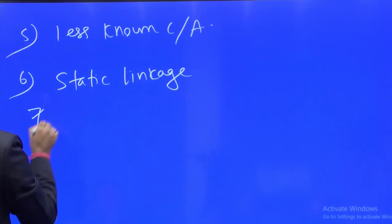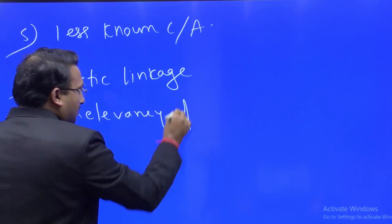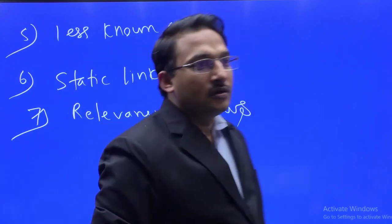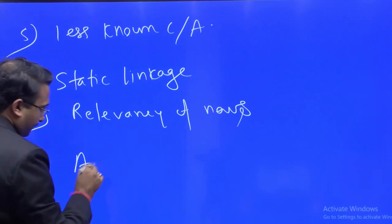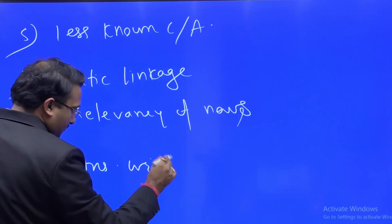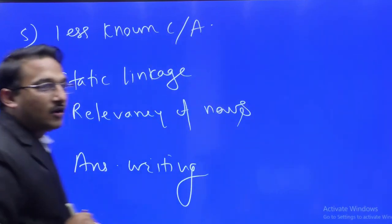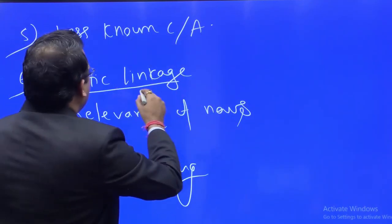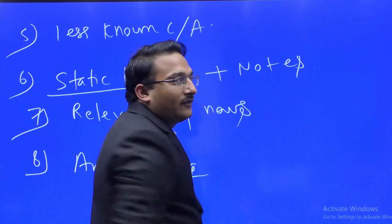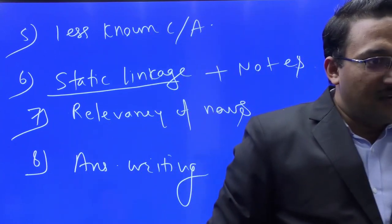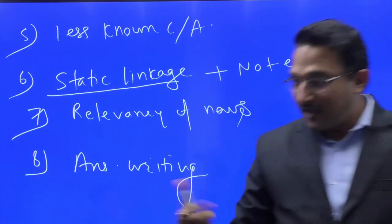UPSC is not anymore asking from the mainstream current affairs — how to go about it, basically how to cover non-mainstream or peripheral current affairs. Which news is relevant and which is not — how to decide? Connecting with the static part, relevancy of news, how to connect with answer writing — very good question. How to integrate static notes with current affairs, and sources for current affairs to tackle prelims questions.